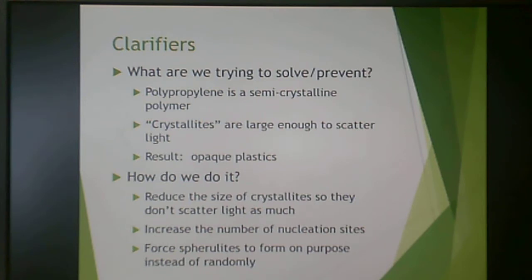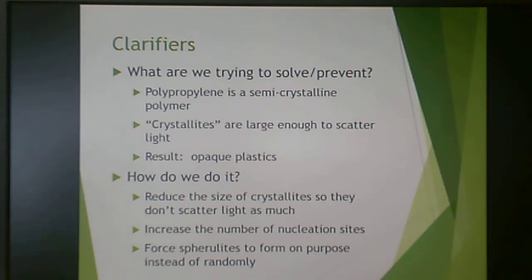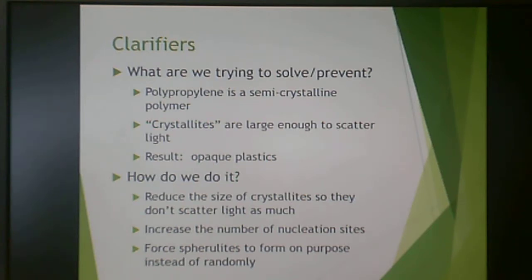Clarifiers are also used. If you have a semi-crystalline polymer, the crystallites can be larger than the wavelength of light, so a light beam hits a crystallite, bounces off, and results in something that looks opaque. What we want is for crystallites to be really small so that instead of a light beam bouncing off, it scatters and still passes through. We can increase the number of nucleation sites and force spherulites to form on purpose — when they form randomly they get really big, which is bad for clarity; formed on purpose they're smaller and increase clarity.